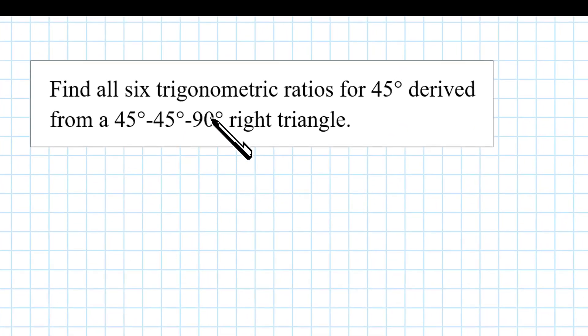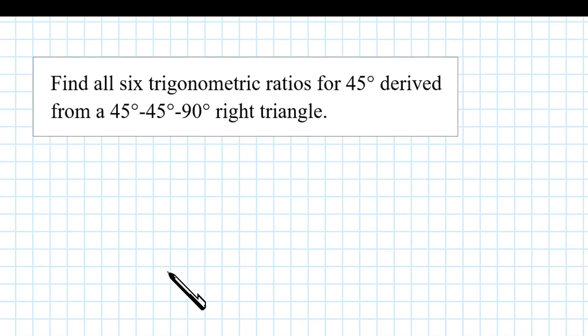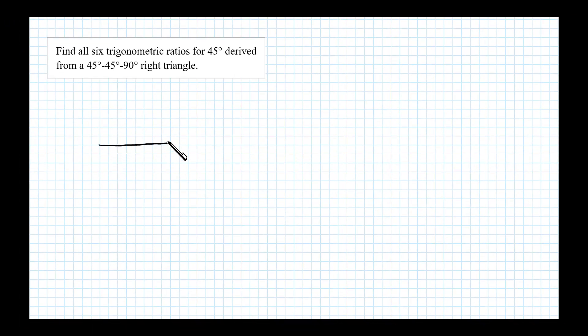Here we want to find all six trigonometric ratios for 45 degrees and we'll derive that using the 45-45-90 right triangle.